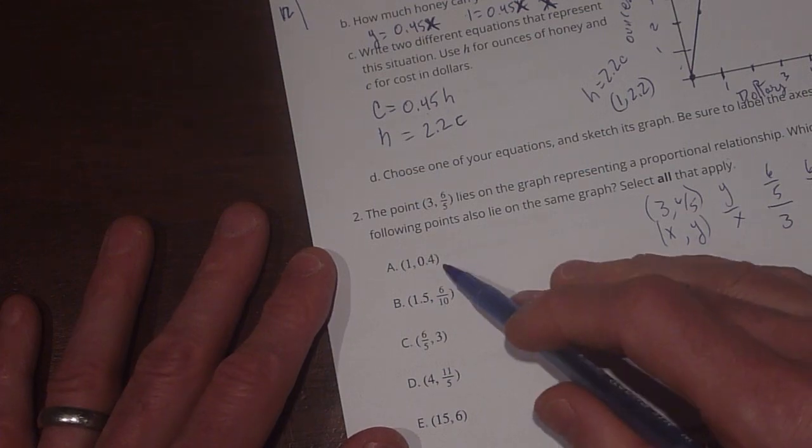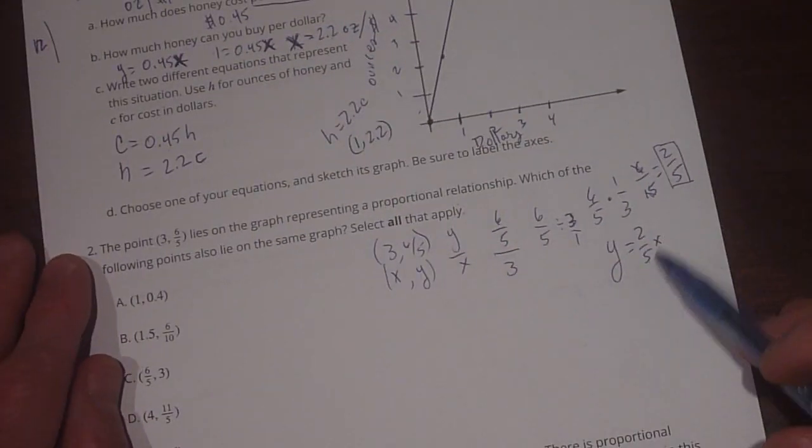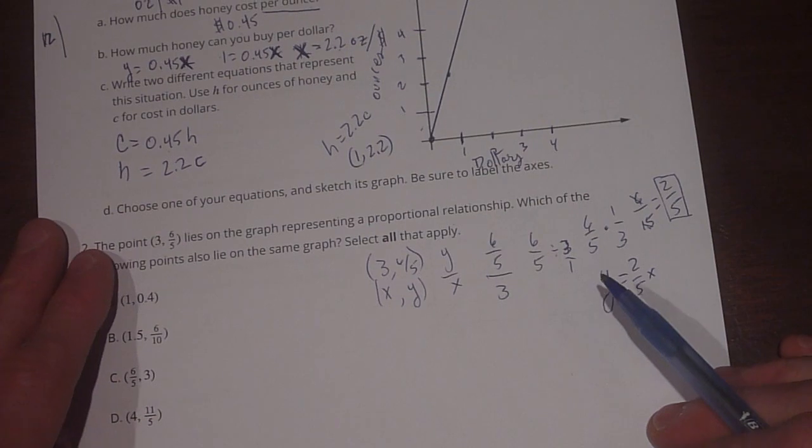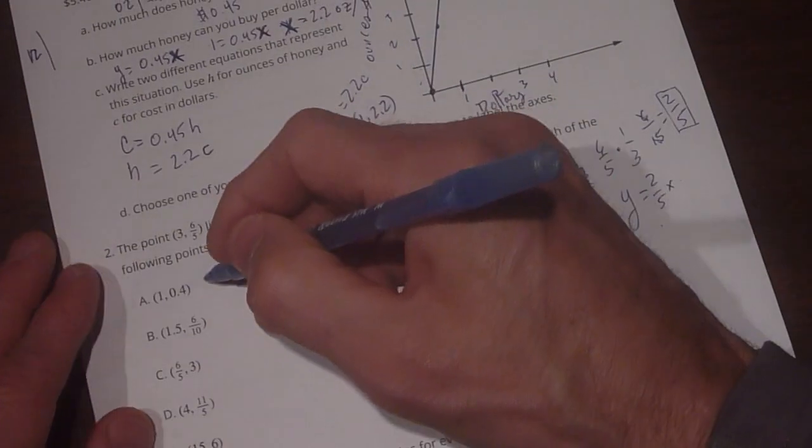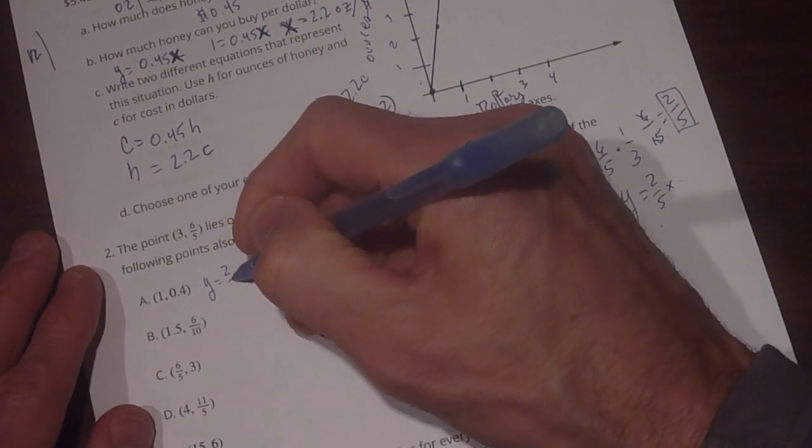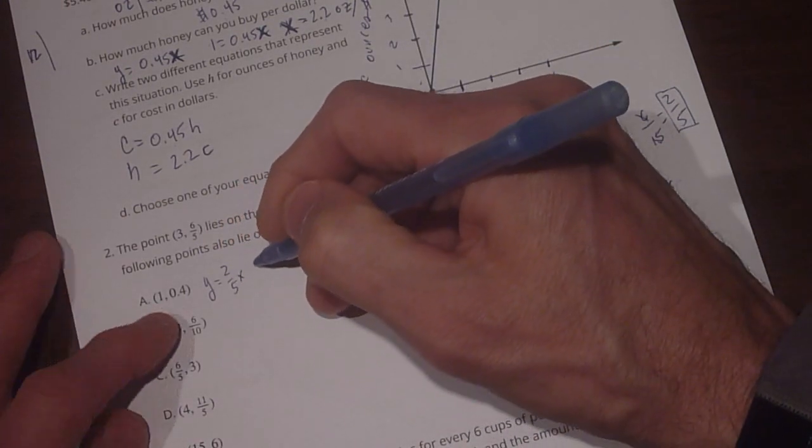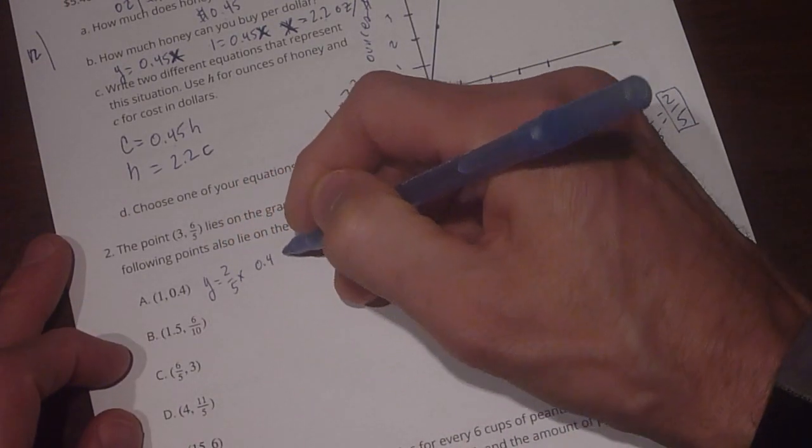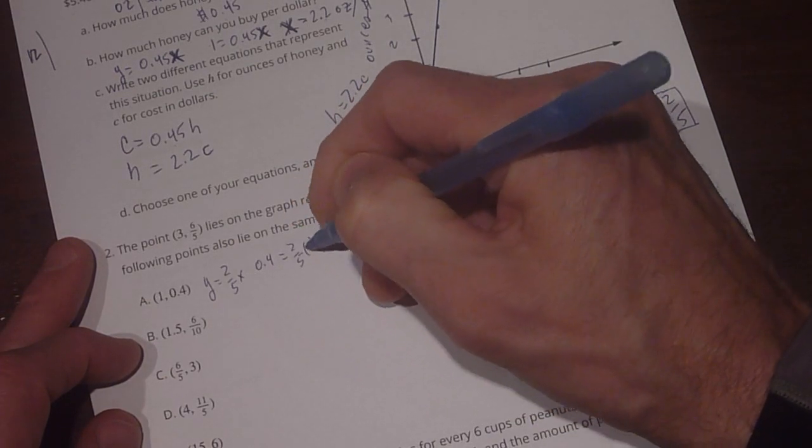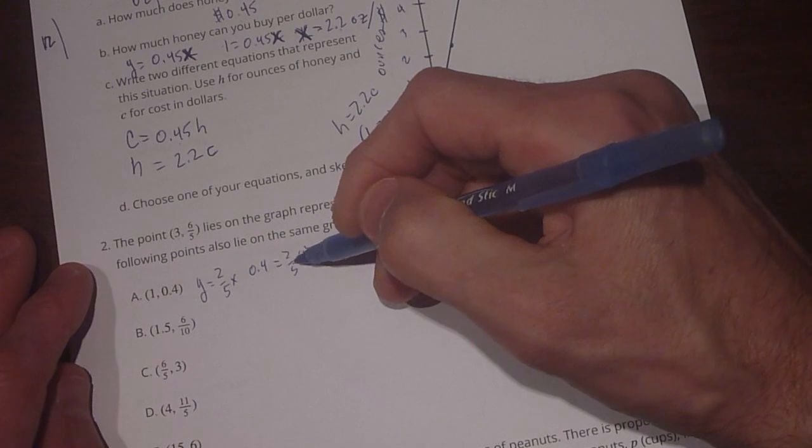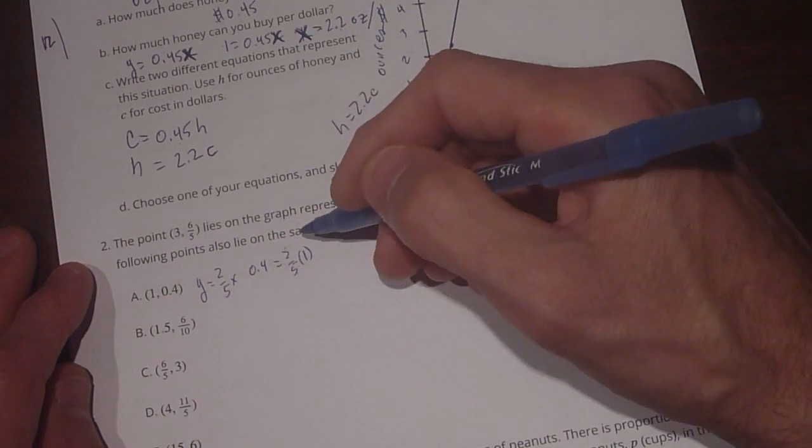So now we plug in our points over here. We know that y is going to equal 2 fifths x. So now we plug it in here to say y equals 2 fifths x. So our y is 0.4, and does that equal 2 fifths times 1? Okay, so it does, because 2 fifths times 1 equals 0.4.